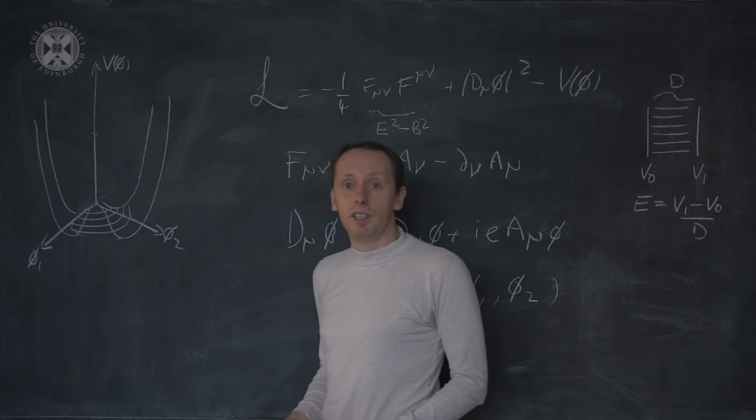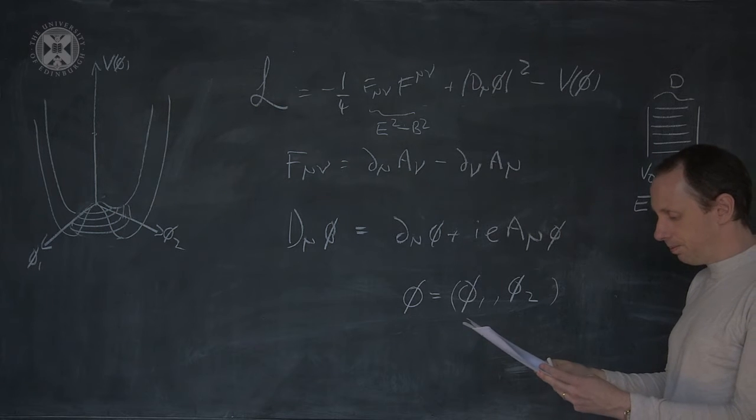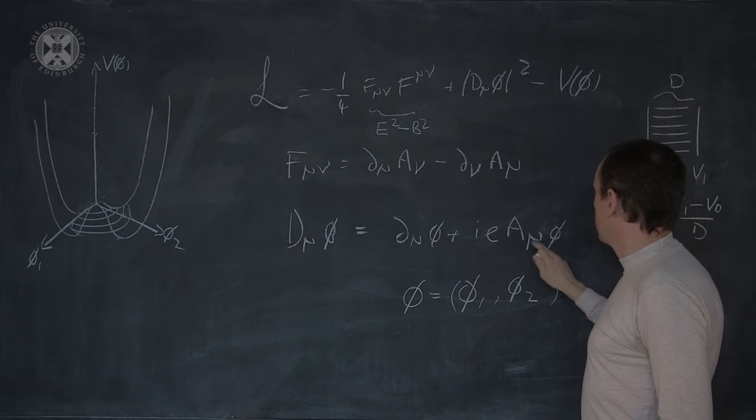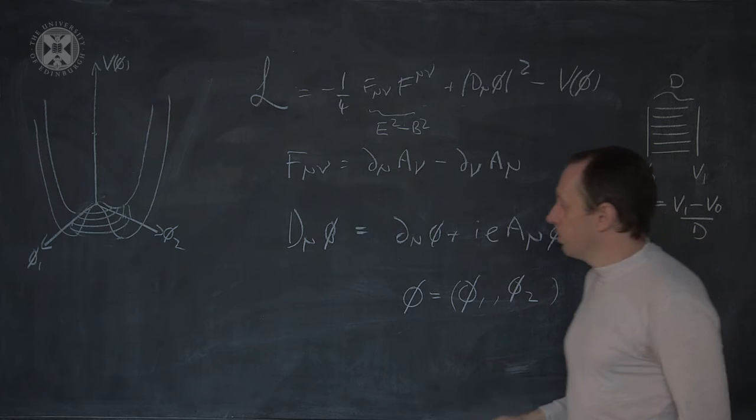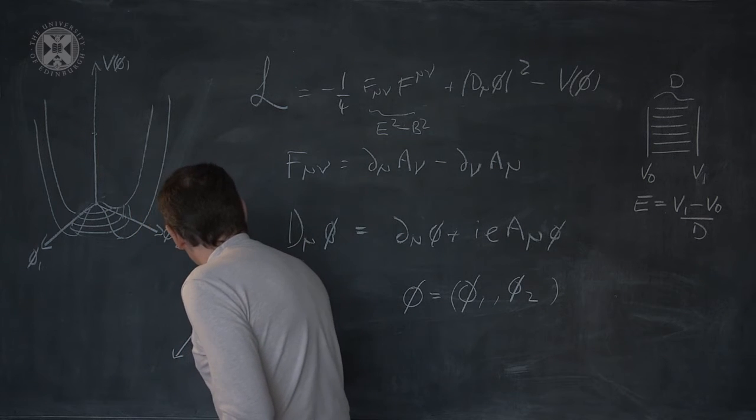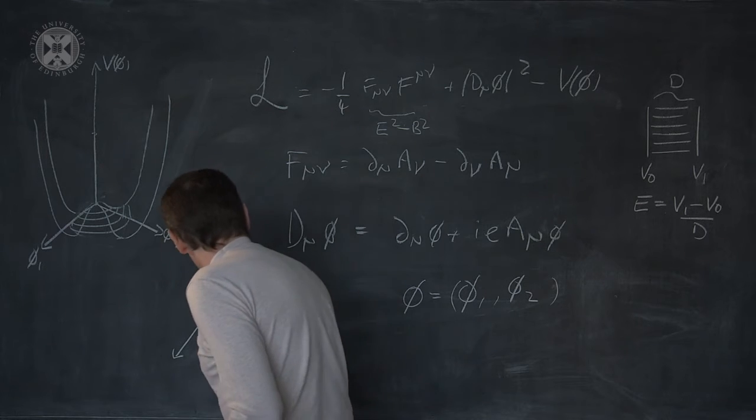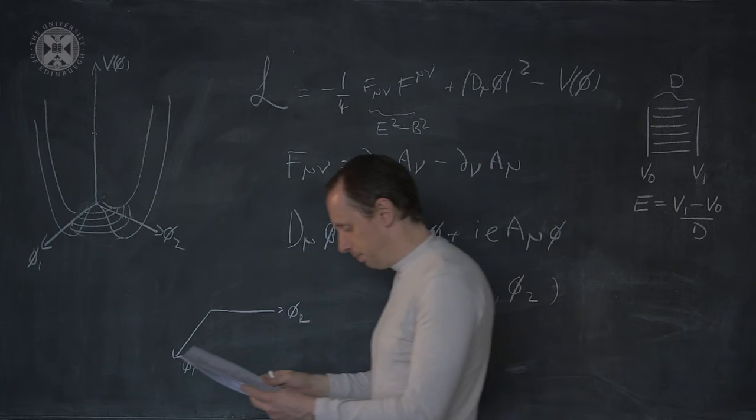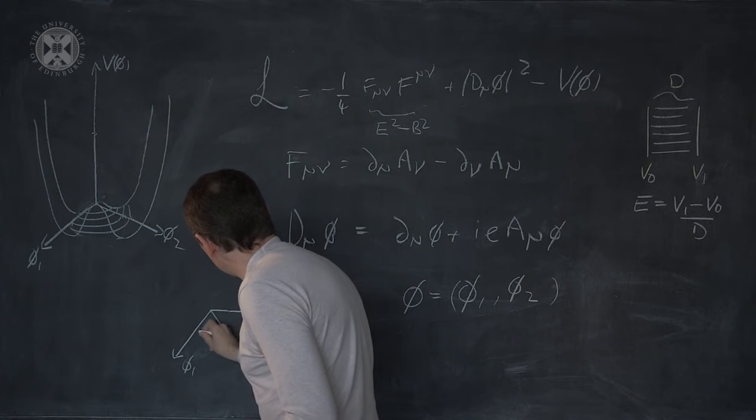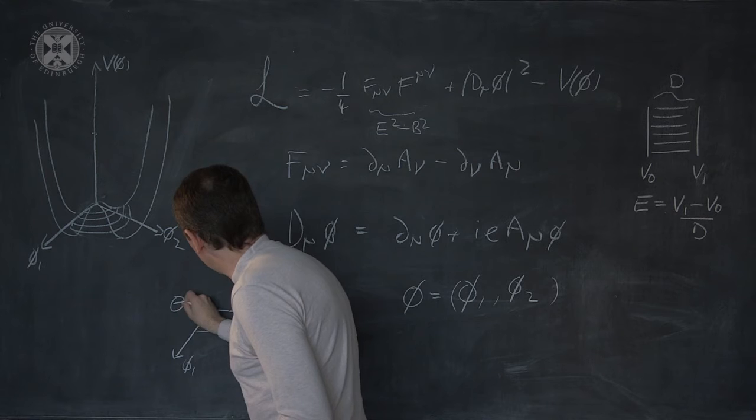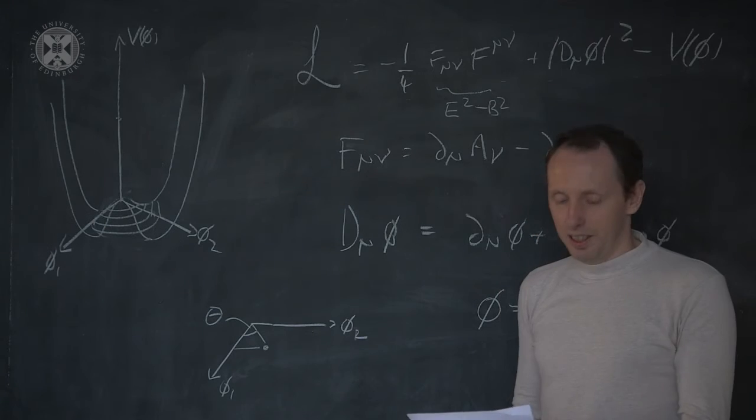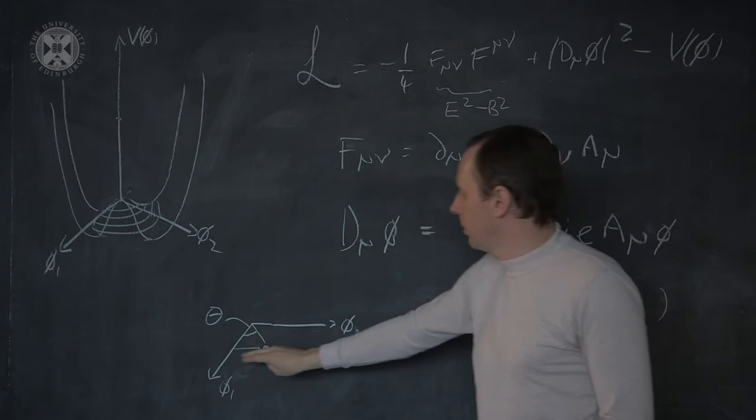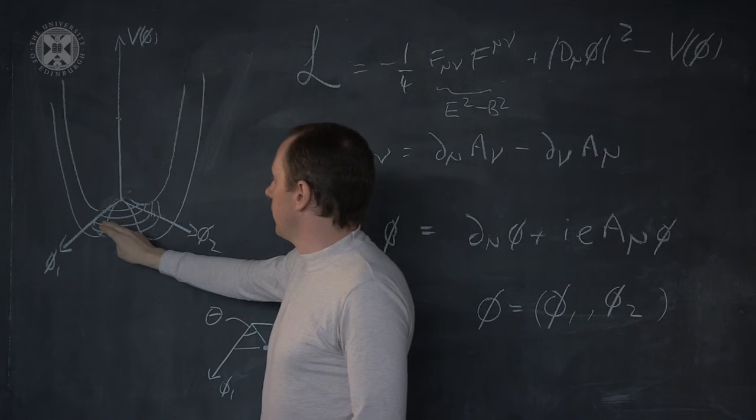Professor Higgs has drawn the two components here as Cartesian coordinates. This term, D mu phi, couples the scalar field to the electromagnetism. We'll draw phi 1 and phi 2 as Cartesian coordinates on a plane. If we take a value of the field, we can take this angle theta as a phase angle for the field. Now we have our two Cartesian coordinates, and we can draw the energy density associated with the potential term V phi as a function of these two coordinates. And we see they have a Mexican hat-shaped potential.